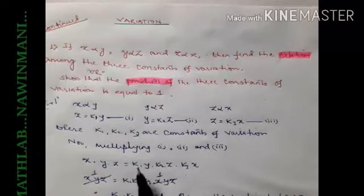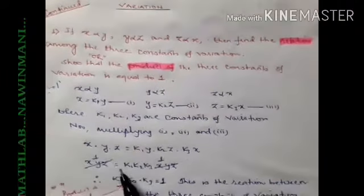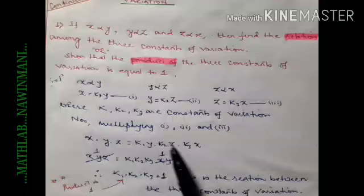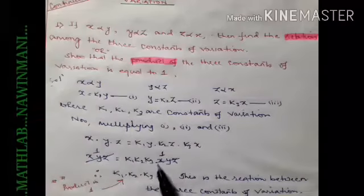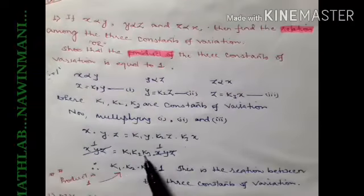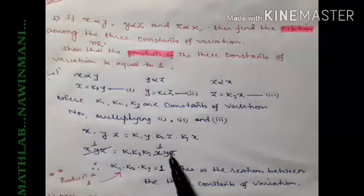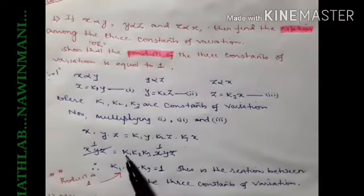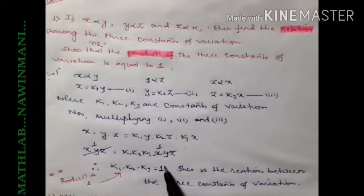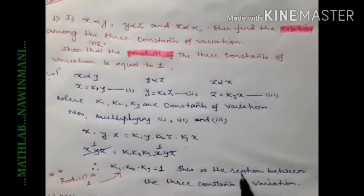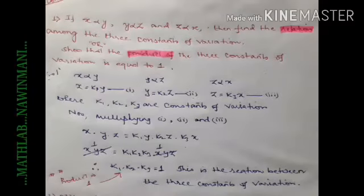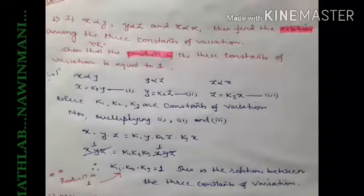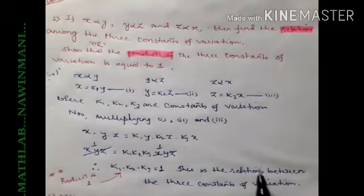After multiplying, you get xyz = k1 · k2 · k3 · xyz. Since xyz appears on both sides, you can cancel them, giving k1 · k2 · k3 = 1.